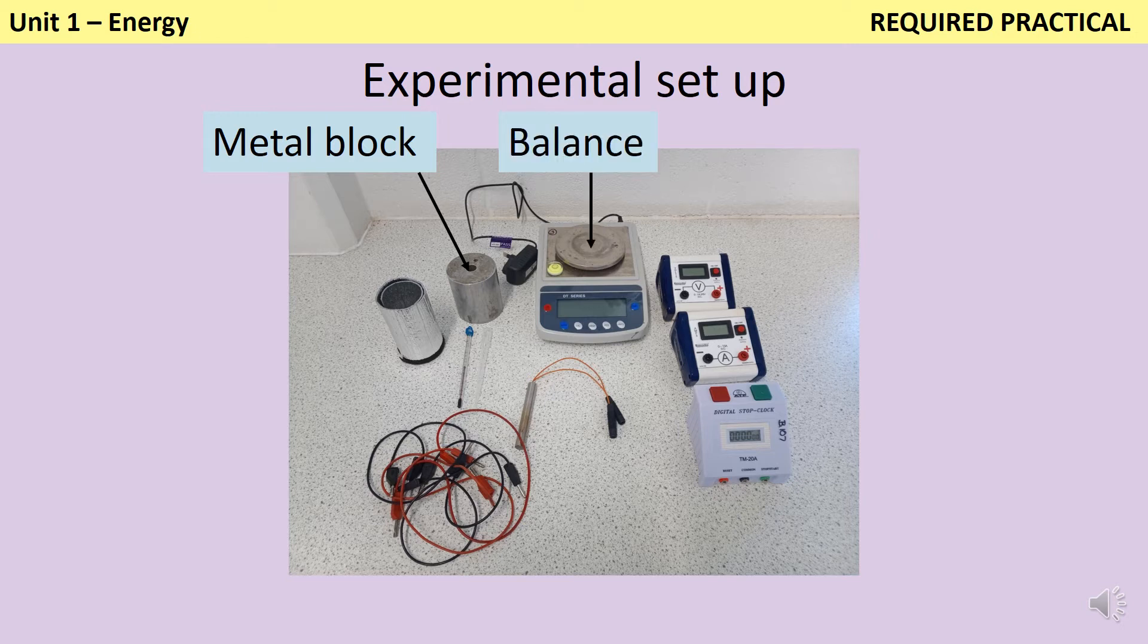Second, I have a balance in order to work out the mass of my block. It is possible to buy specific blocks that are exactly one kilogram for this purpose, but even then I should really be using a balance to double check. If my block only weighed half a kilogram, I'd need to take that into account in my calculations. The third thing is some insulation to go around the outside of my block or beaker. This is to minimize the amount of energy being lost to the environment, because we're going to assume that all the energy given to the block has gone into it and been used to raise its temperature.